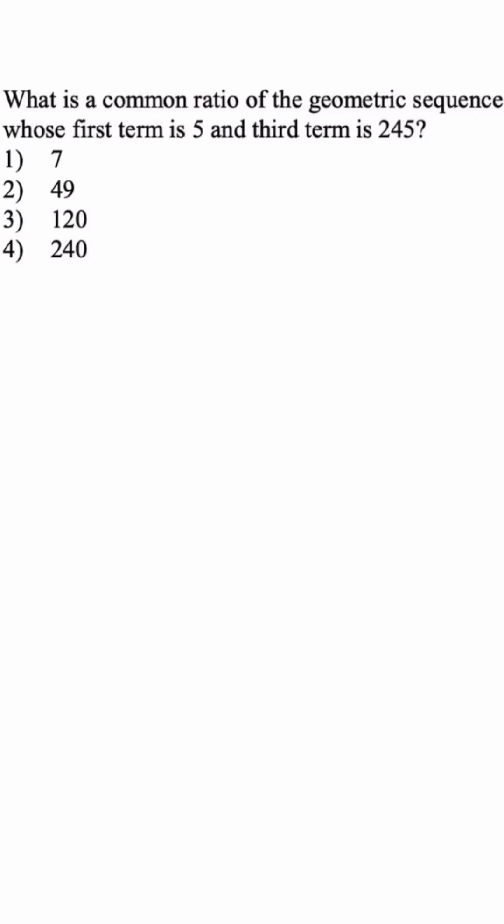We have a geometric sequence, and they want us to determine the common ratio. So we're going to use the formula a sub n is equal to a sub 1 times r to the n minus 1 power.